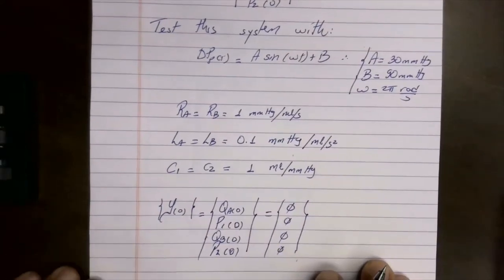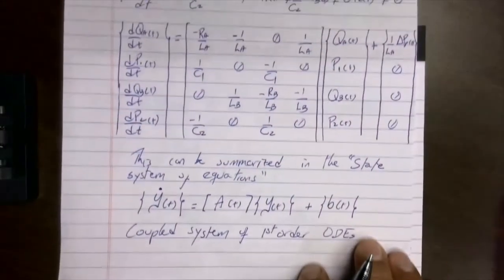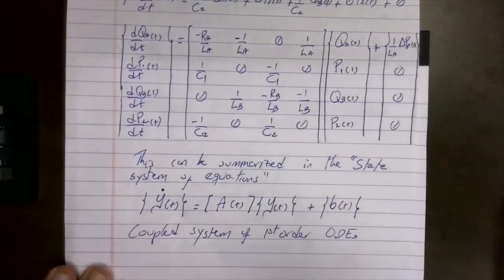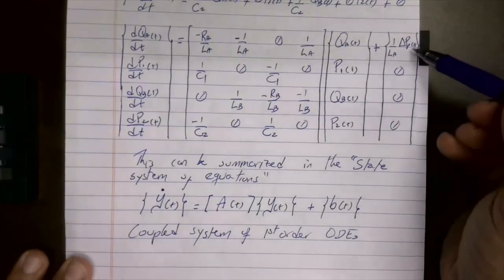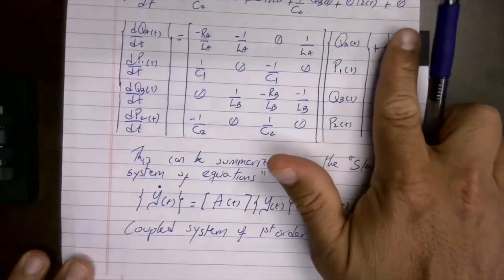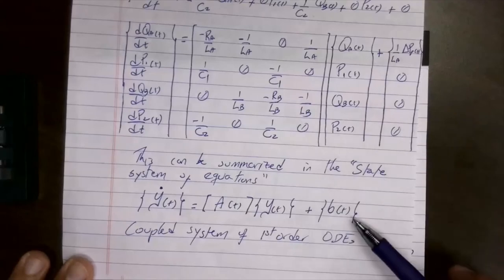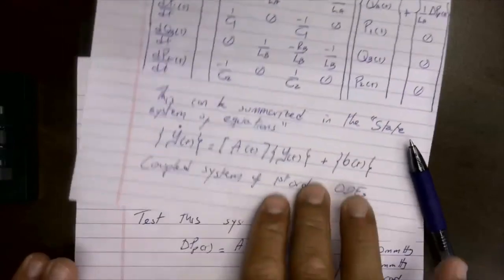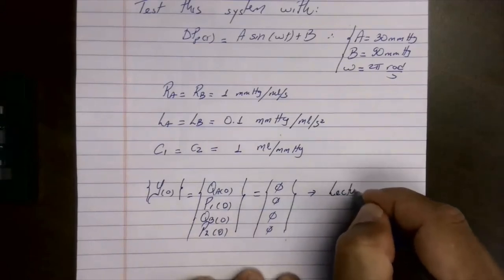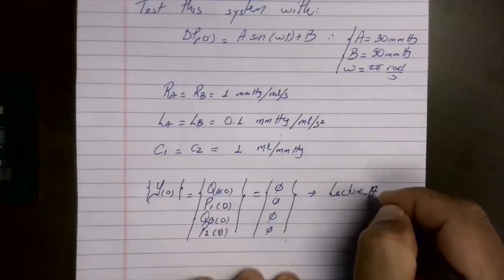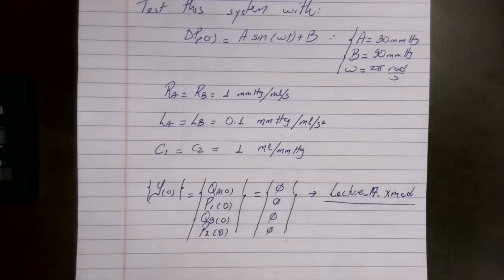Starting all initial conditions at zero is fine because the equations are non-homogeneous — we have the independent term driving the system. Even if all flows and pressures start at zero, the system will come out of the trivial solution due to that non-homogeneous term. If both equations and initial conditions were homogeneous, the solution would always be trivially zero. We'll exercise this in Lecture 17 MathCat.